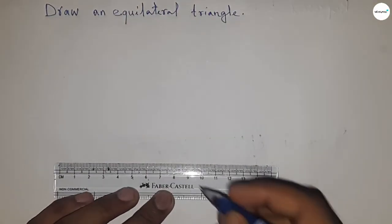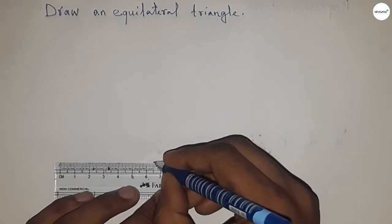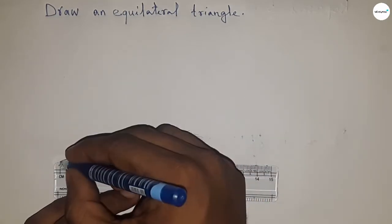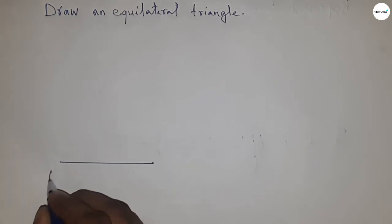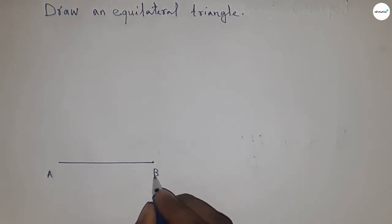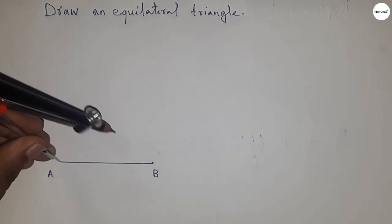Now first of all, drawing a side 6.5 centimeter. So this is 6.5 centimeter and this is AB line.